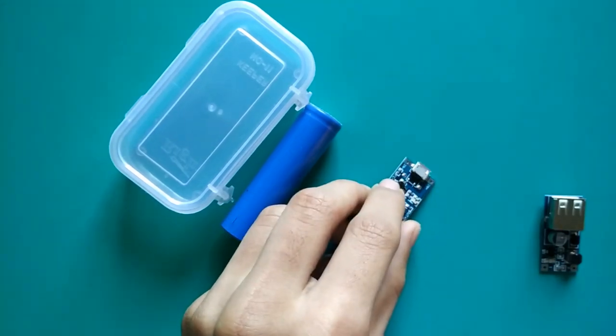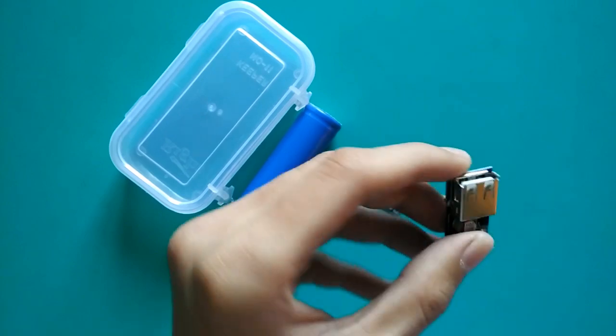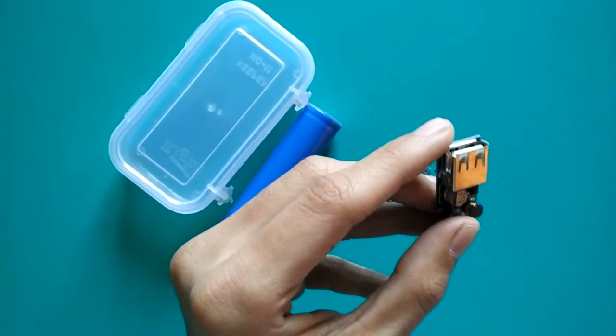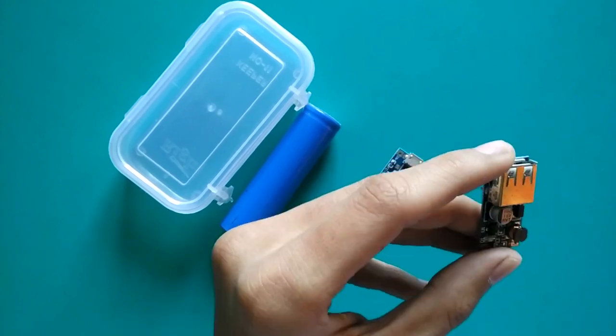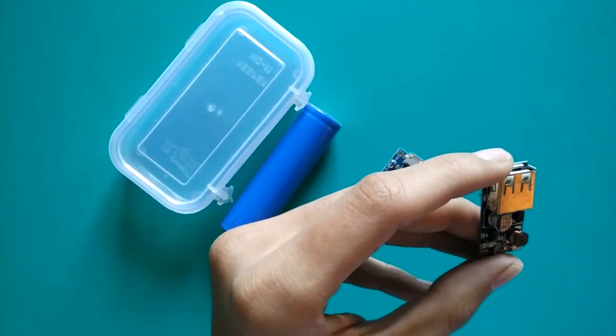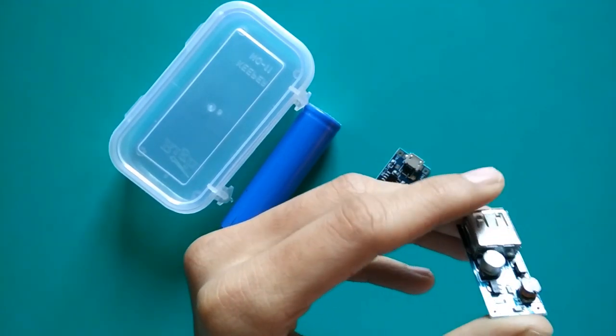So our third module is a 3 volt to 5 volt step-up DC boost module. This module will convert the 3.7 volt of the battery to the chargeable voltage of 5 volt for our mobiles.